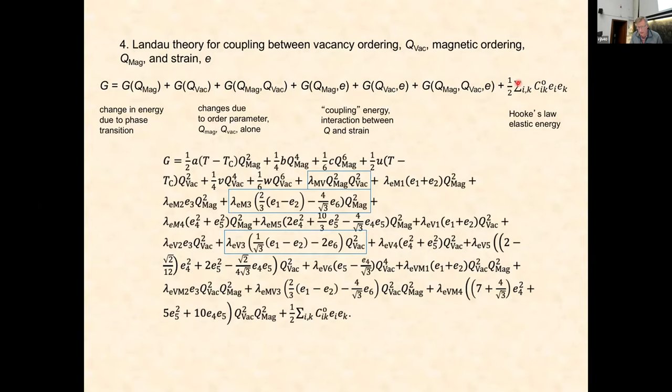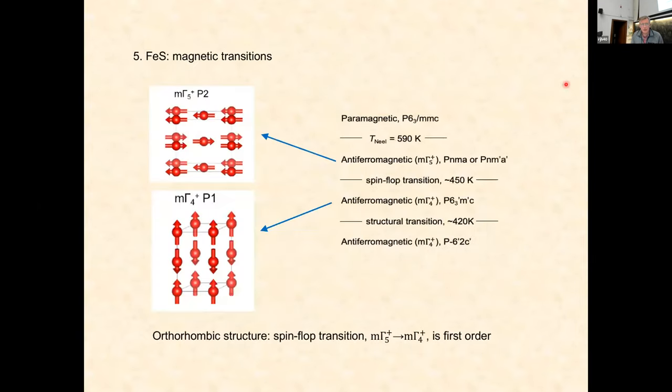More practically, the kind of things one does on magnetometers, troilite is paramagnetic above 590K. It has a spin-flop transition at 450K, and both of those are antiferromagnetic. It goes from this mΓ5+ scheme to the mΓ4+ scheme. Spin-flops are first order, there's no group-subgroup relationships.